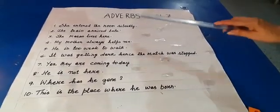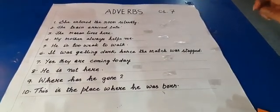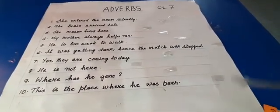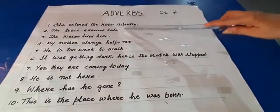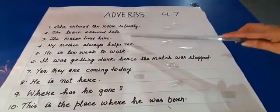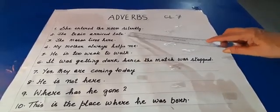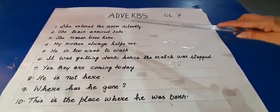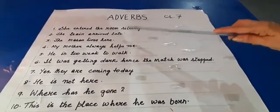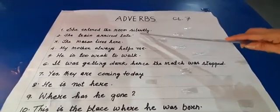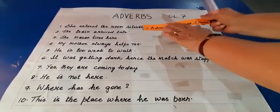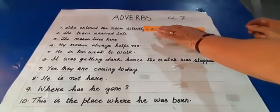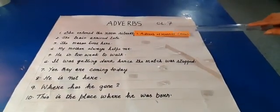Now we have answered questions and we know which is the adverb. Let's see if we can name the adverb. In sentence one, I asked the question 'how' — how did she enter the room? We answered 'silently.' When you answer 'how,' that means it is the manner in which the action was done. Therefore, this is the adverb of manner.